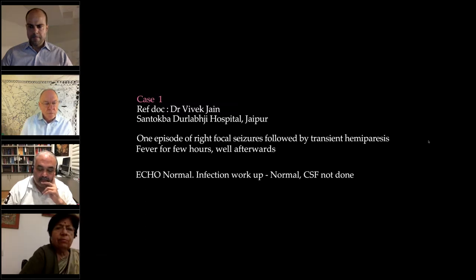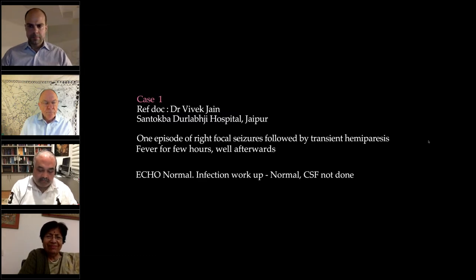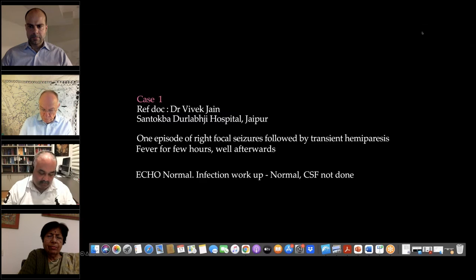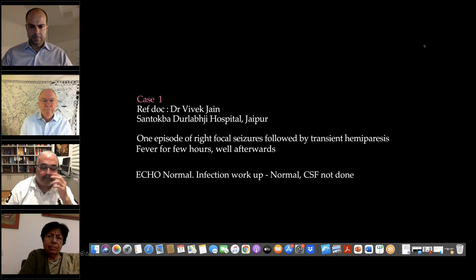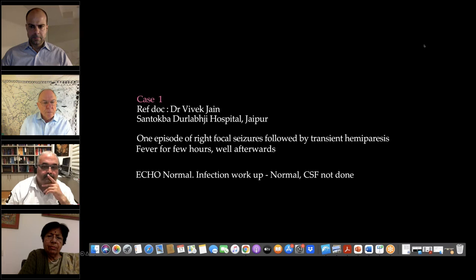The history is so uncomplicated that one would wonder why to discuss this case. This child came to me a few days after the episode — child was very well, no hemiparesis. History was: three days prior, few hours of fever, one episode of right focal seizure, transient hemiparesis, then improvement. Parents came just to find out the reason. I thought it might be an atypical febrile seizure, but because of the hemiparesis I did an MRI brain.